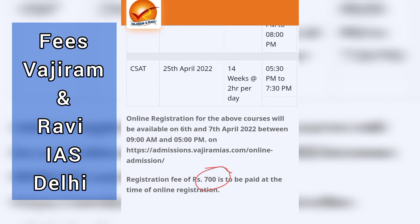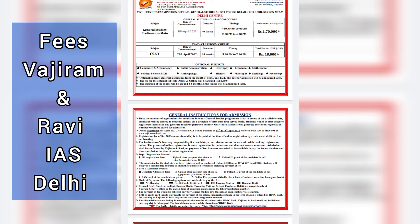The registration charge of rupees 700 has to be paid at the time of online registration. You can download the brochure of Wajiram and Ravi for the complete fees structure as I have told you.